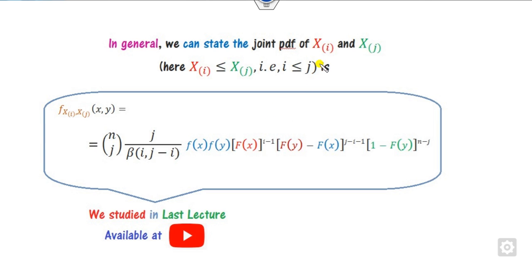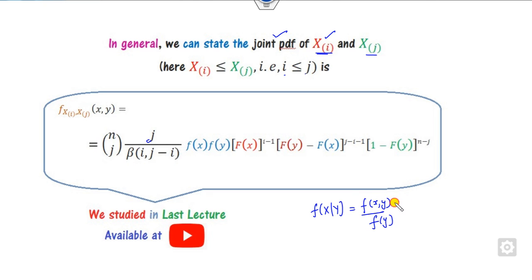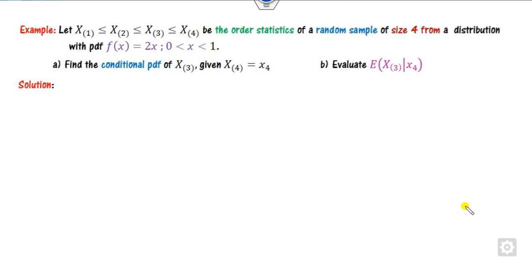What we discussed in the last lecture is how to calculate the joint density function between the ordered pair Xi and Xj, provided j is greater than i, using the formula involving nCj and the beta function. Why is there a need for the joint density function? Because our target is to find the conditional probability. By definition, the conditional probability is the joint density function in the numerator divided by the marginal density function in the denominator. So our first target is to compute the joint density function, and then compute the marginal density function using integration.